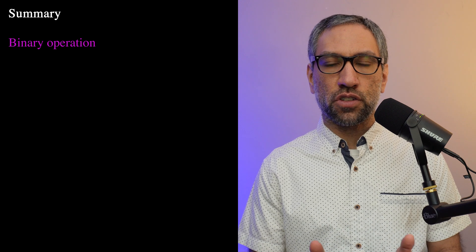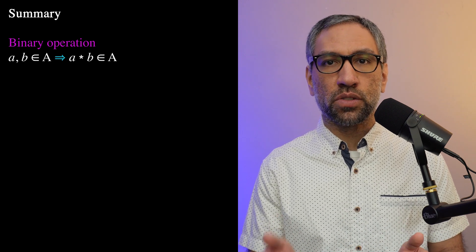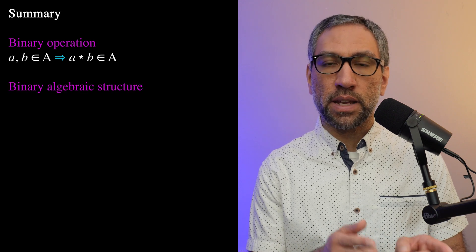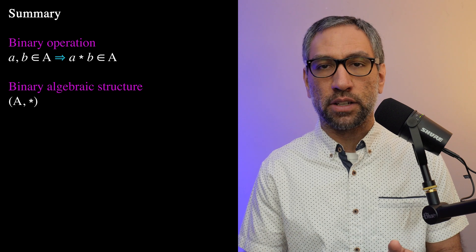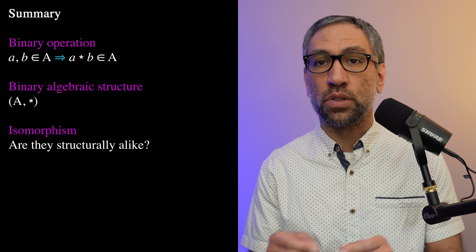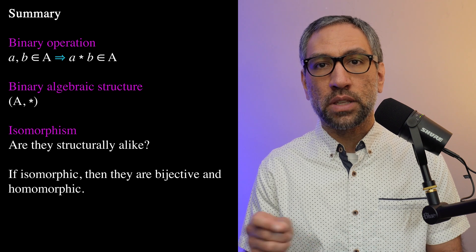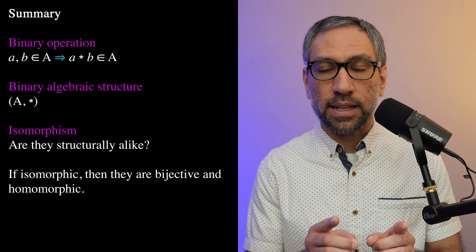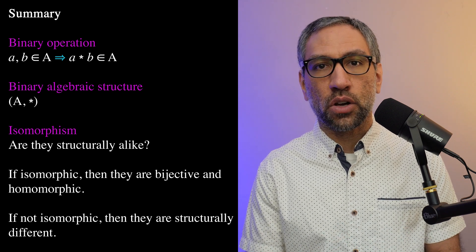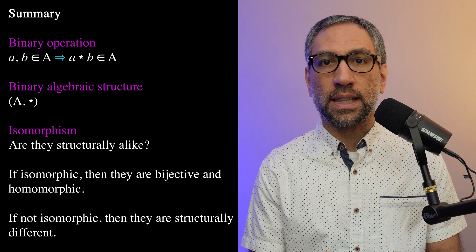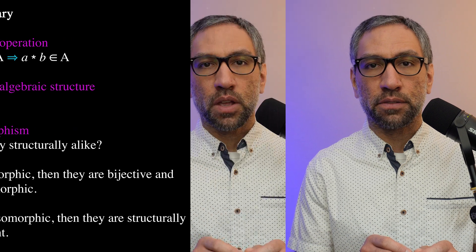To recap: a binary operation is an operation that combines two elements of a set to produce another element of the same set. A binary algebraic structure is a set that has a binary operation defined on it. Isomorphism is a way of comparing two binary structures to determine if they are alike or not. To show two binary structures are isomorphic, we need to demonstrate a bijective function between them and that the homomorphism property is satisfied. To show they are not isomorphic, we demonstrate that they are structurally different or not bijective. Thanks for watching — I hope this video helped you understand these important concepts in abstract algebra.